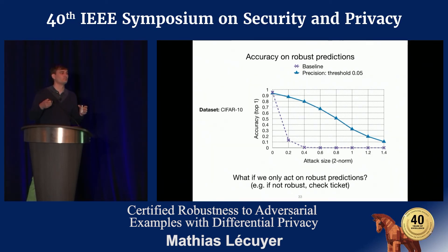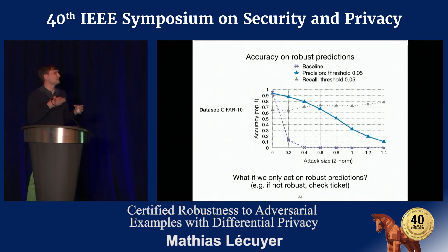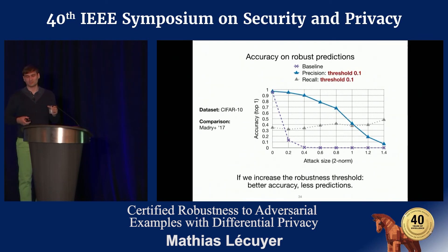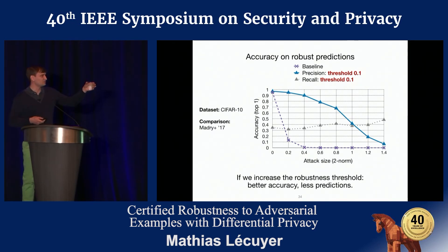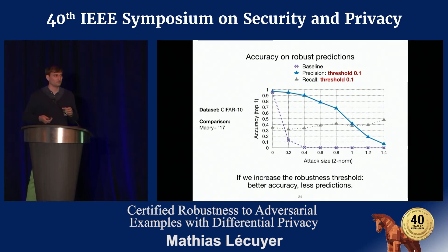Of course some predictions are not robust. We can still make robust predictions for about 70% of all images, which is quite good. Increasing the robustness threshold reduces coverage to around 40% of images, but those predictions are even harder to attack and accuracy under attack is even higher.